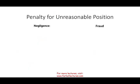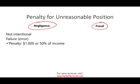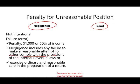There is a penalty for taking an unreasonable position. When you take an unreasonable position, it can be done with either fraud or negligence in mind. Negligence means you did not do it intentionally — it's simply an error or failure. The penalty is $1,000 or 50% of the income derived from that transaction. Negligence includes any failure to make a reasonable attempt to comply with the provisions of the internal revenue laws or to exercise ordinary and reasonable care in preparation of the return.